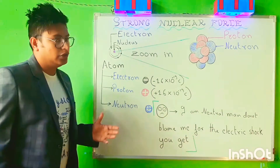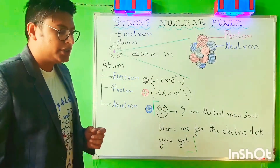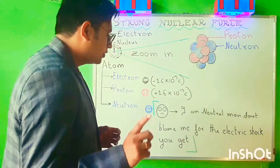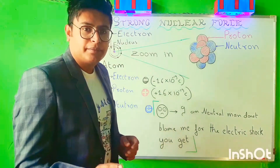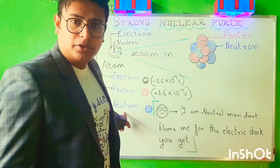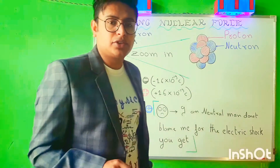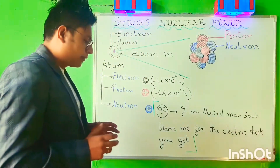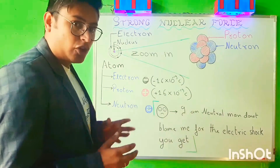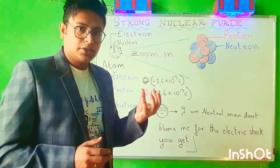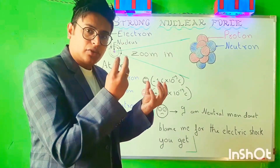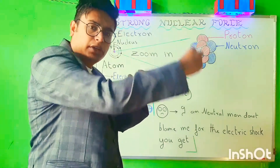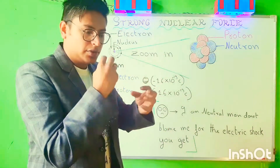And then we have a neutron, which is a neutral particle — that means you can't blame this particular fellow for the electric shock that you get. So, an atom consists of a nucleus and we have the electrons, the negatively charged particles, revolving around the nucleus.